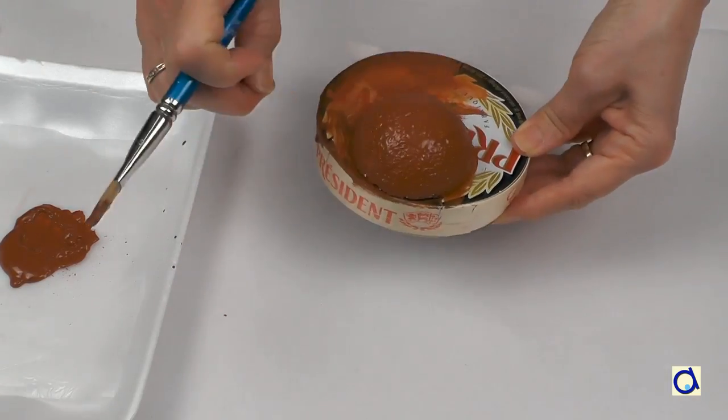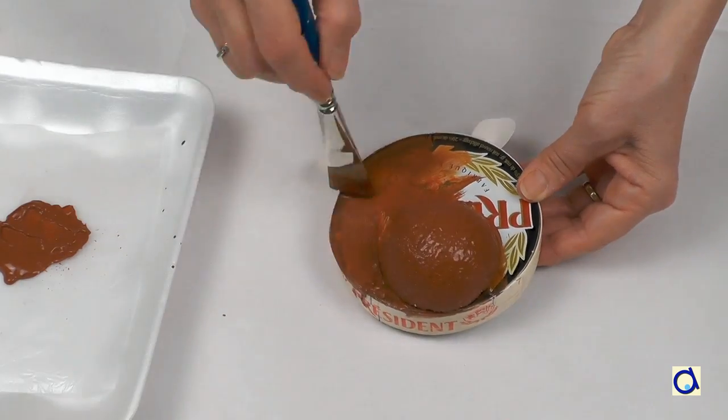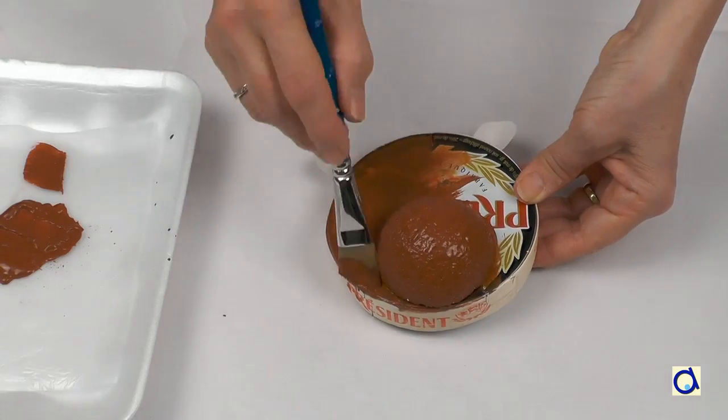When the glue is dry, paint the head of the beaver brown. For best results, add the second coat of paint and let dry.